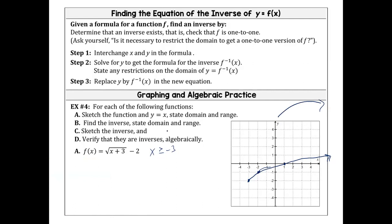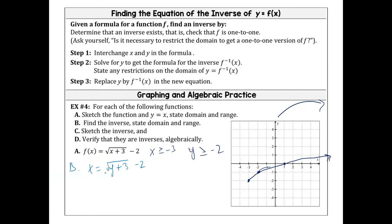Now we're going to find the inverse and state its domain. Our original f of x has domain: x greater than or equal to negative three, and range: y greater than or equal to negative two. To find the inverse, we switch the places of x and y. So it becomes x equals the square root of y plus 3 minus 2. Our job is to get y by itself.